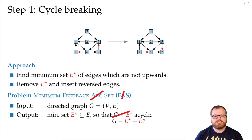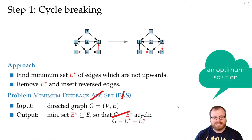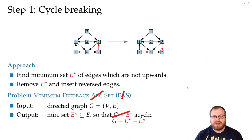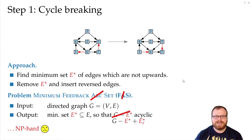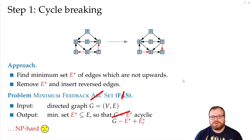So we not only want G minus E-star to be acyclic, but G minus E-star plus ER-star, where the edges are reversed. In the exercise sheet, you will show that a solution for minimum feedback arc set is also a solution to minimum feedback set. However, the problem is NP-hard in general, so we cannot expect to find a good solution efficiently. Instead, I will show you two heuristics that provide guarantees on how many edges we have to revert.